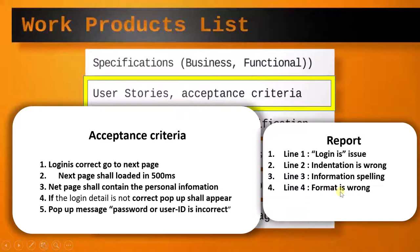In the fourth line, the format is wrong — all previous lines are in caps, but the fourth line is not. So there is a problem with the format. Once the acceptance criteria is ready, we can perform static testing on it. This was the example to demonstrate that.